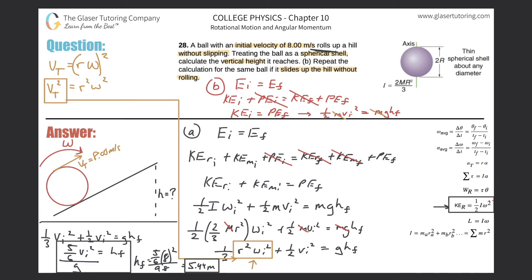Solving for hf: hf equals (1/2) vi² over g. Plugging in: hf equals 0.5 times 8² divided by 9.8, which gives approximately 3.27 meters. That is the final height when the ball slides without rolling.